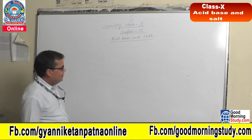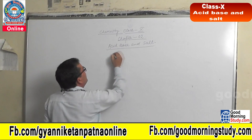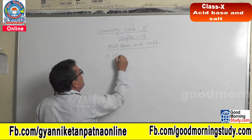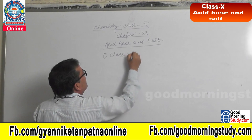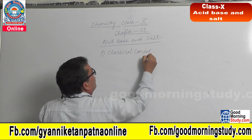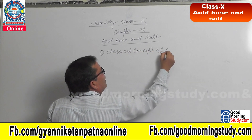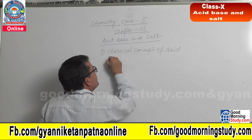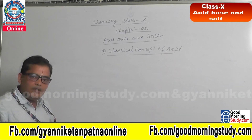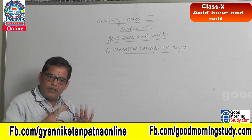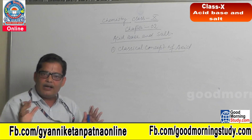How will you define it? There are two concepts of acid and base. The first is the classical concept of acid. In this definition of acid, you will learn about the definition of acid on the basis of physical and chemical characteristics.